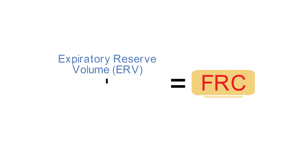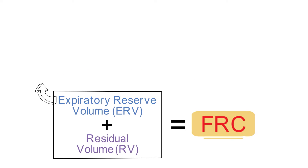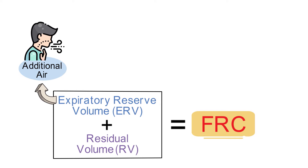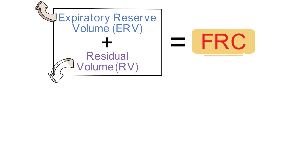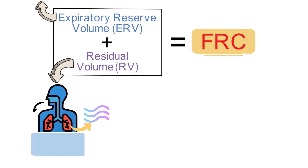FRC is essentially the sum of the expiratory reserve volume and the residual volume. The expiratory reserve volume is the additional air that can be forcefully expelled following a normal exhalation, while the residual volume is the air that remains in the lungs even after a maximal exhalation.